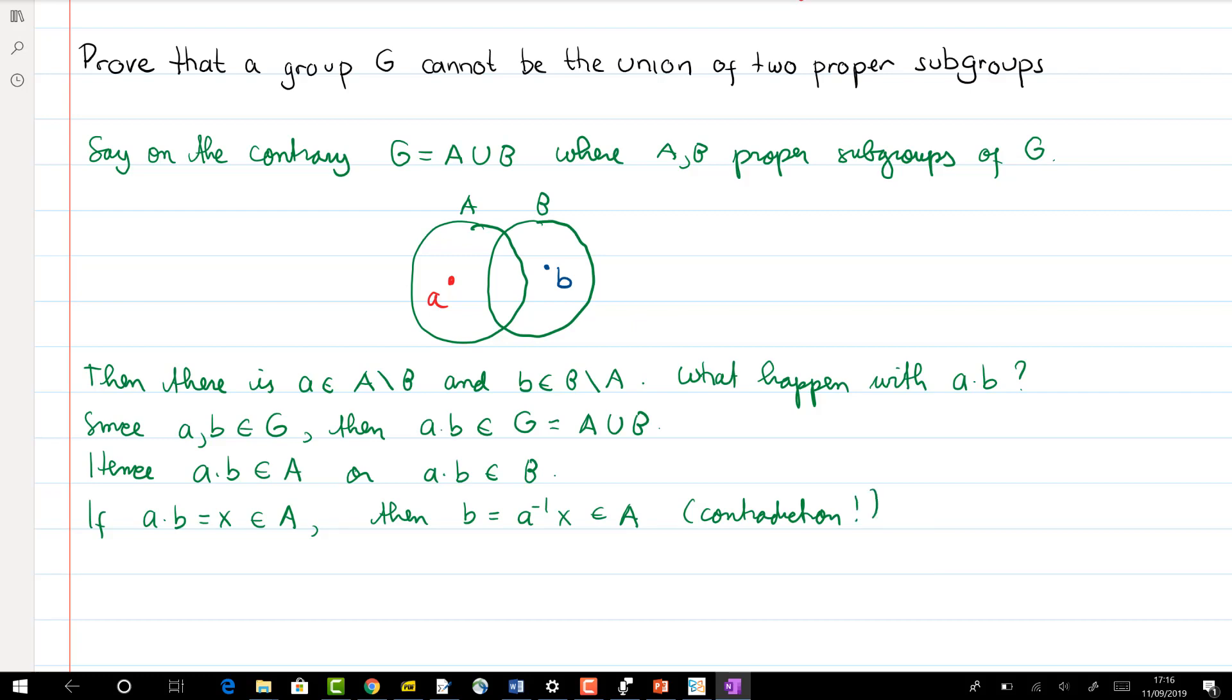But this leads to a contradiction since b is not in A. And similarly we can argue like above: if we have ab equals to y, then a is y b inverse, which is an element in B, but we already knew that a is not in B, so that's another contradiction.